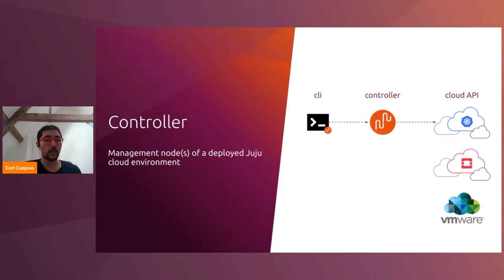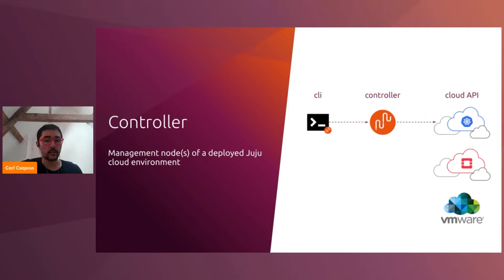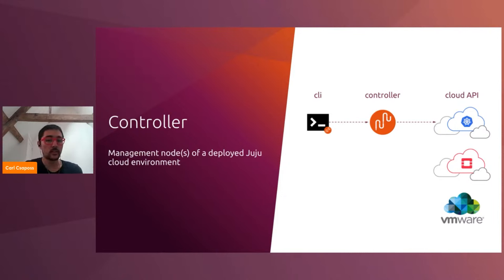The Juju controller is the node that manages other nodes in the cloud environment. For example, if we had a Kubernetes cluster that we wanted to deploy applications to, the controller could be running in a pod in the Kubernetes cluster, and it would be managing and scaling other pods in that cluster. But the controller can also run outside of the cloud it's managing. Also, a controller isn't limited to a single cloud — we could have a single controller that manages a Kubernetes cloud, an OpenStack cloud, and a VMware cloud. For today's workshop, we'll be using a single Kubernetes cluster, and the controller will be in the same cluster as the applications we're deploying.